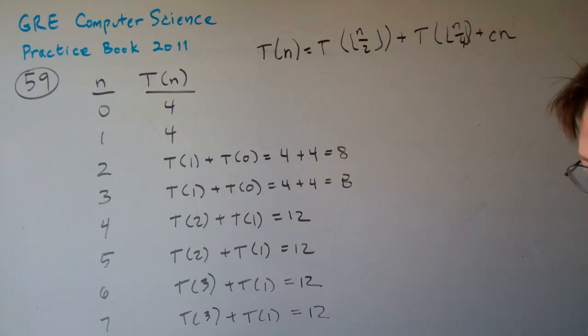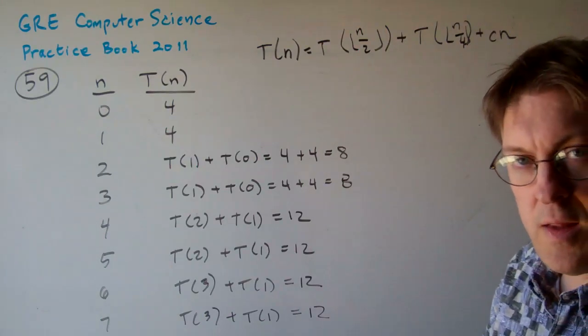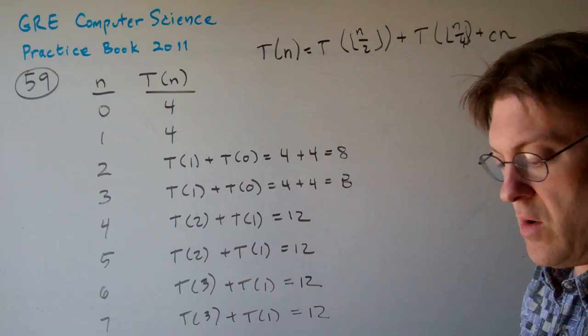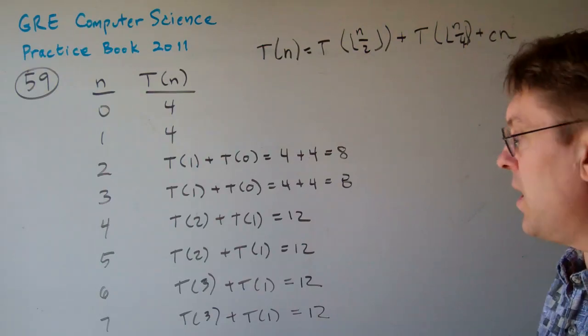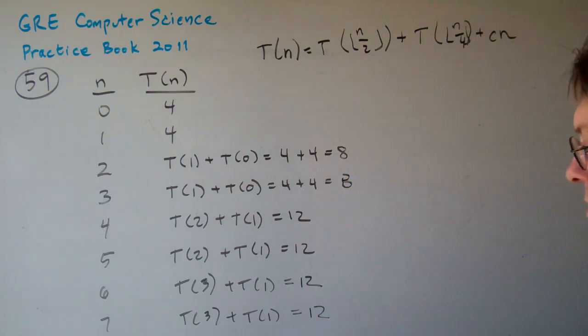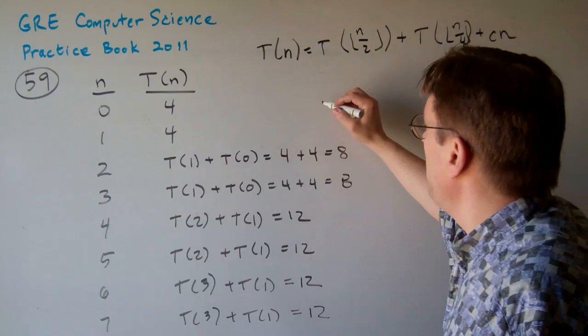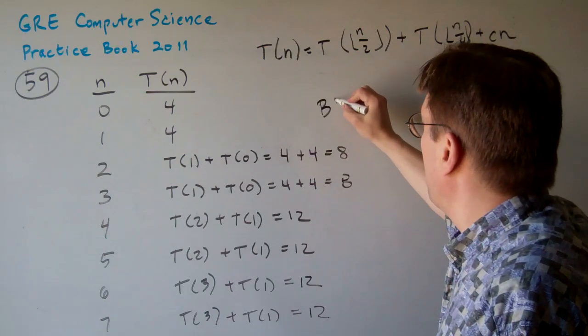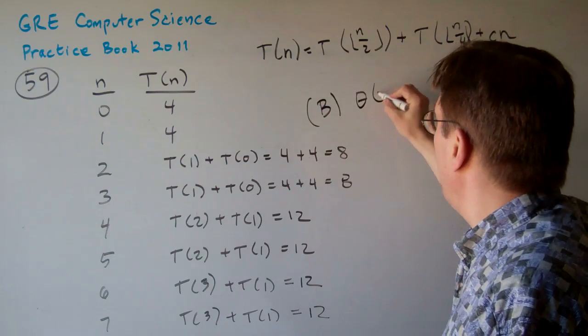So the choices is, the only real choices are it's log n, which is A, or it's theta of n, which is B. Now, you can see that it's definitely not log n. It's not splitting in half each time. So, the only real option left is B theta of n.